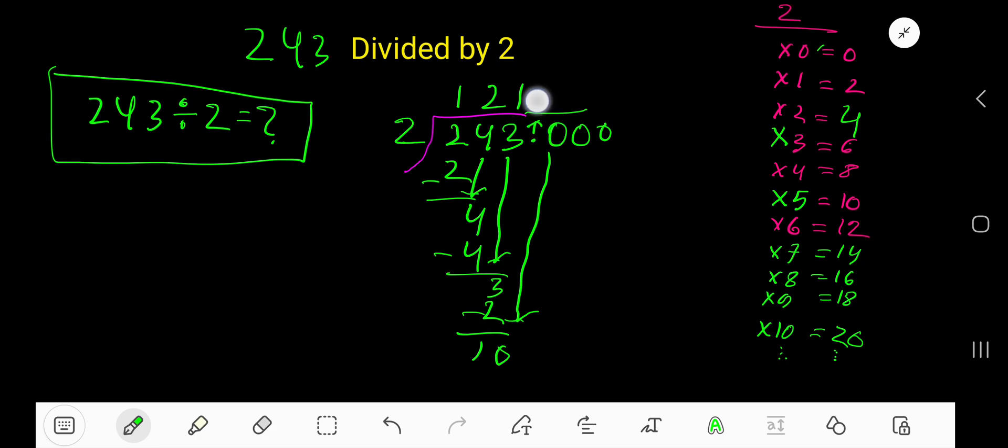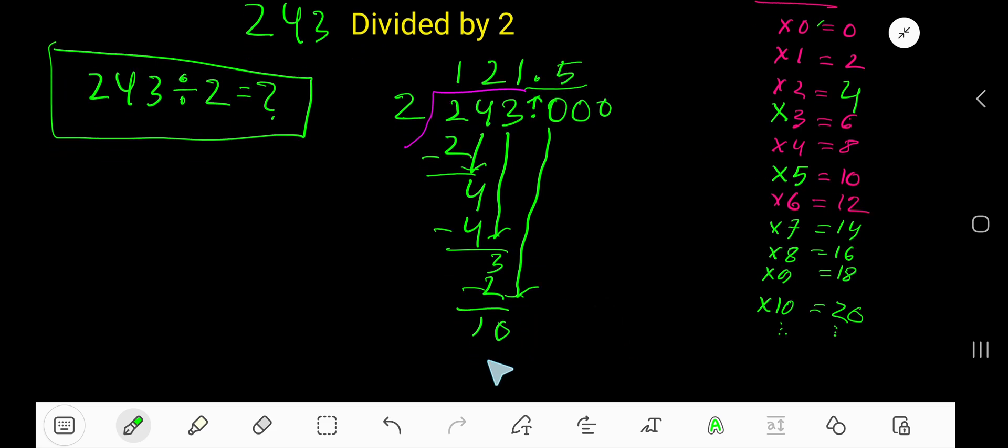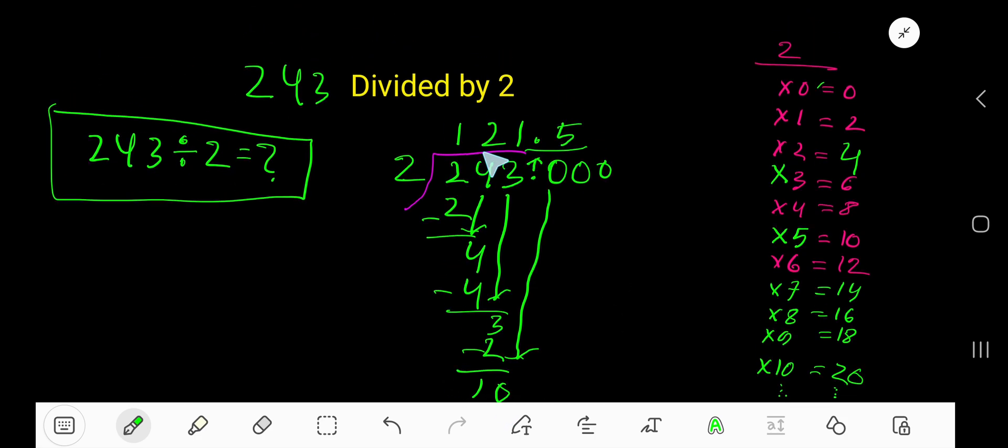Before the 0 there is a decimal. The decimal must come to the quotient directly. 2 goes into 10 how many times? 5 times. 5 times 2 is 10, subtract, 0. So our answer is 121.5.